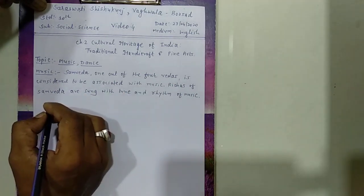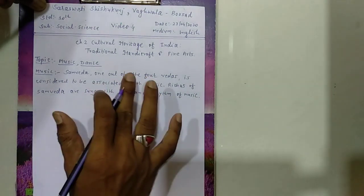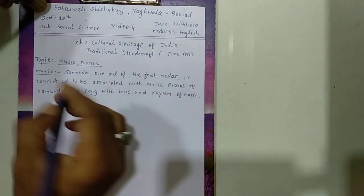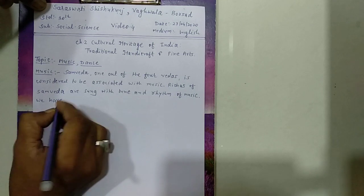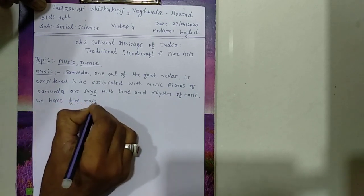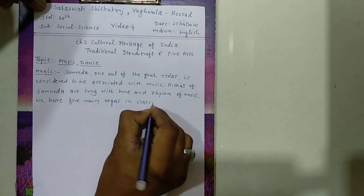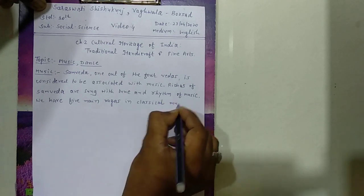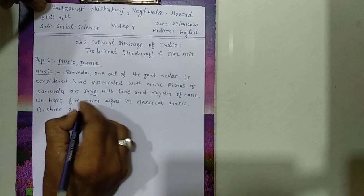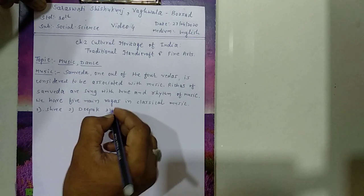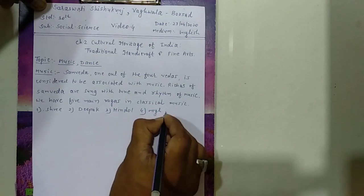Indian music can be divided mainly into two parts: Classical music and Folk music. In classical music, we have five main Ragas: first, Sri; second, Deepak; third, Hindol; fourth, Meg; and fifth, Bhairavi.